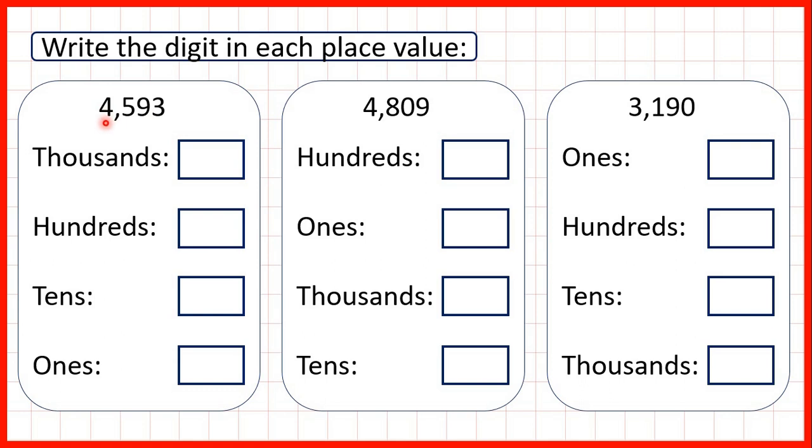So first, we have the number 4,593. So the thousands digit is a four. Remember, if we have a four-digit number, the thousands digit will be the first digit.